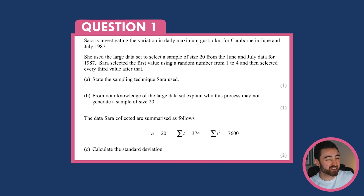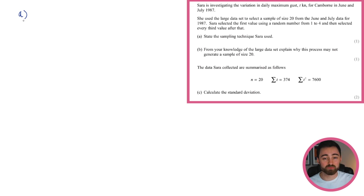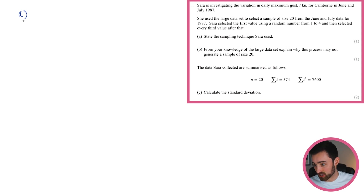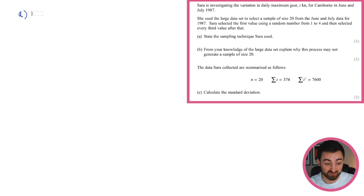They might be trying to throw you off slightly with this random number thing. You might be thinking it's some kind of random sampling. But after this random number, she's got a system — she's saying every third value I'm going to choose. That's a system. So this is actually systematic sampling because she's going through this data in a systematic way. So this is systematic sampling, and that's all you need for part A.